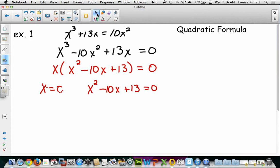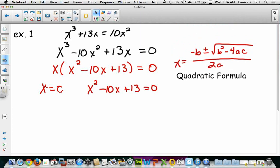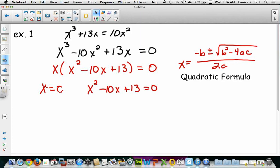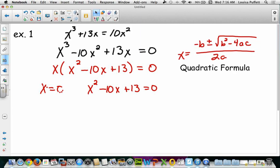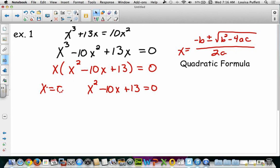But we might not remember what the quadratic formula is. So we left a little note here for us to help remind us. So the quadratic formula says that when I have a quadratic equation in standard form, x equals the opposite of b plus or minus the square root of b squared minus 4 times a times c all over 2a.